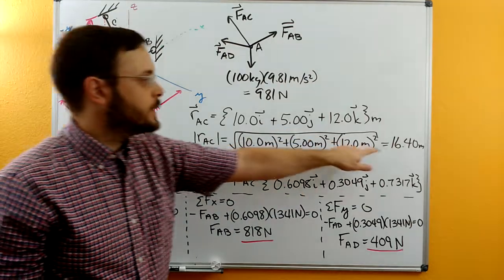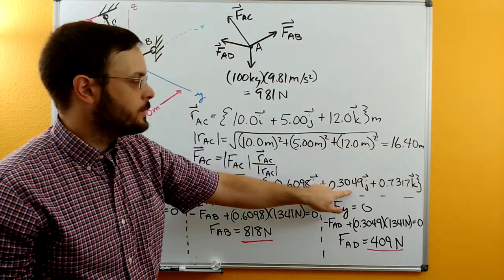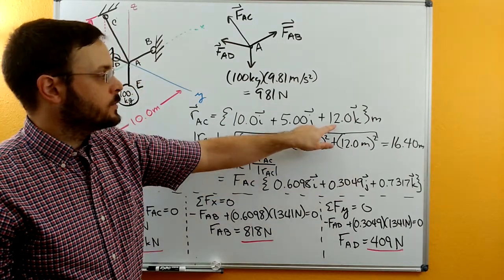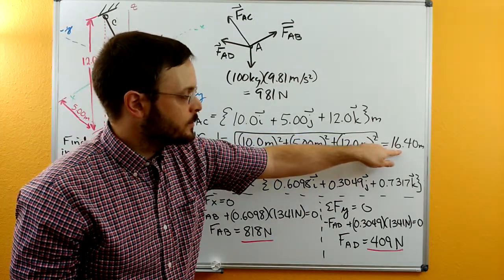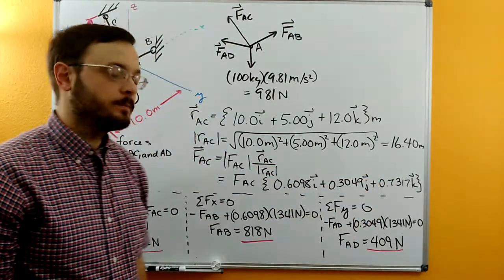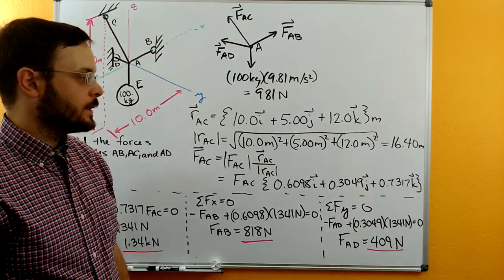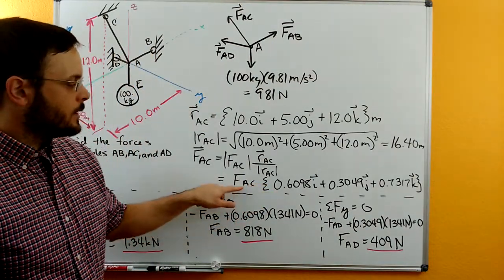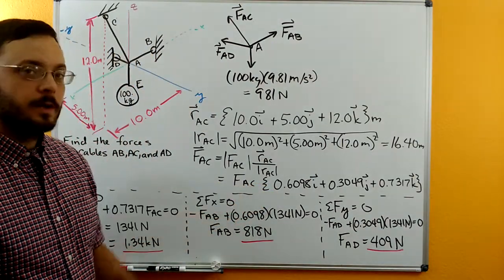Then you take your 5 divided by 16.40. That would be your Y component and sit in front of the J, and then 12 divided by 16.40 for the K there. And this is actually the unit vector that defines that direction multiplied by that magnitude FAC.